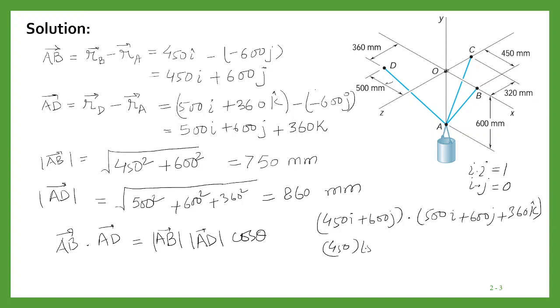So you take the product of these vectors, then we will get 450 times 500 plus 600 times 600. This will be the left-hand side of this equation.